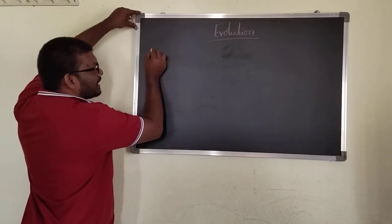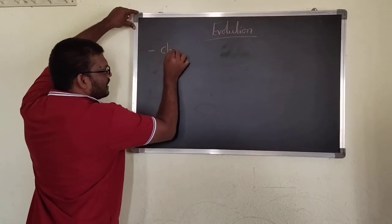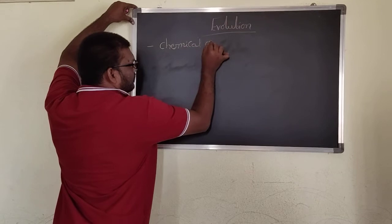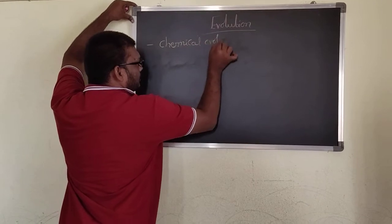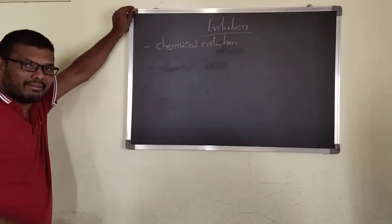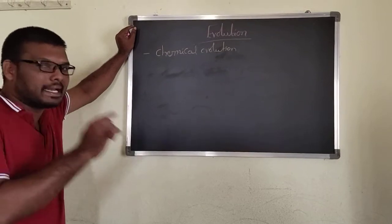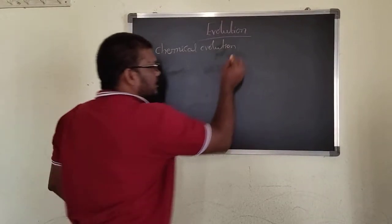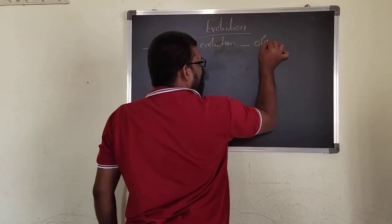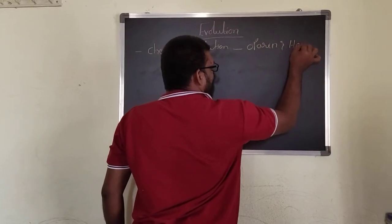We also discussed regarding chemical evolution. Chemical evolution — biological evolution came from the chemical evolution. That is explained by Oparin and Haldane.